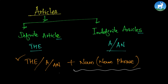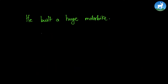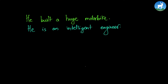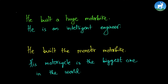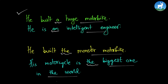Let us look at some more examples. We studied about it in paragraph form, but now let's study by writing some simple sentences. He built a huge motorbike. He is an intelligent engineer. He built the monster motorbike. His motorcycle is the biggest one in the world. The first two show the use of indefinite articles, while the last two show the use of the definite article. An article is followed by a noun phrase.